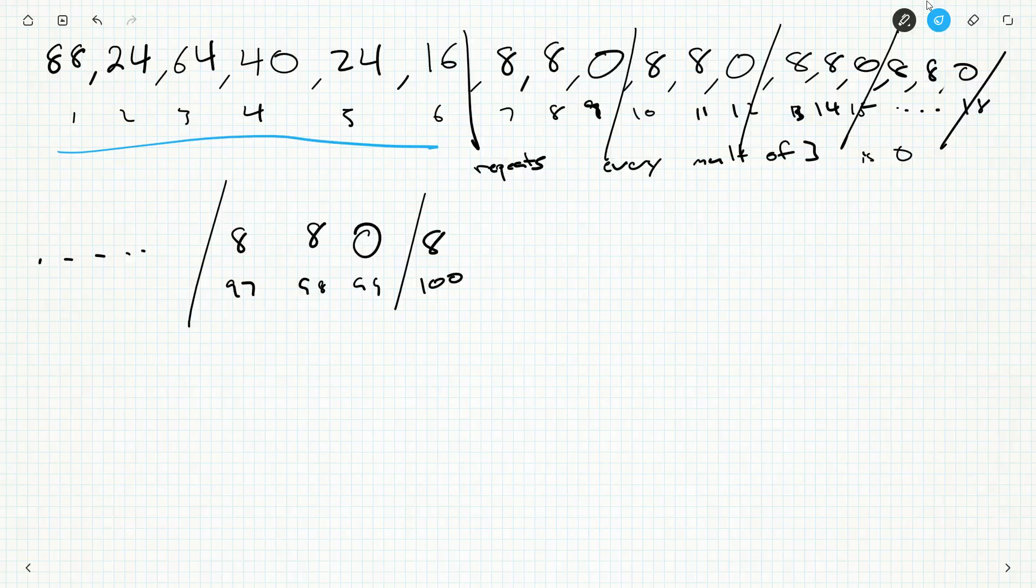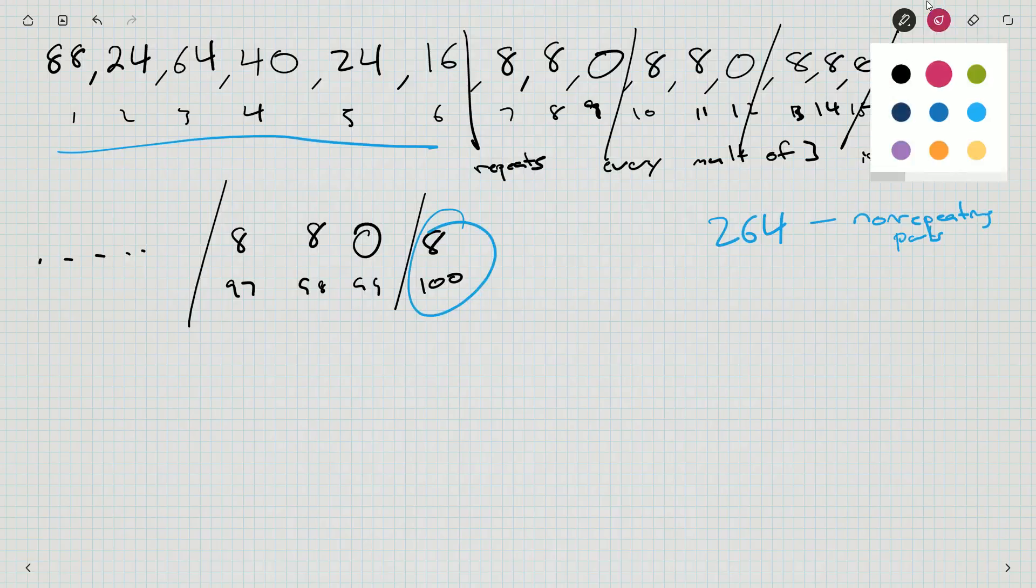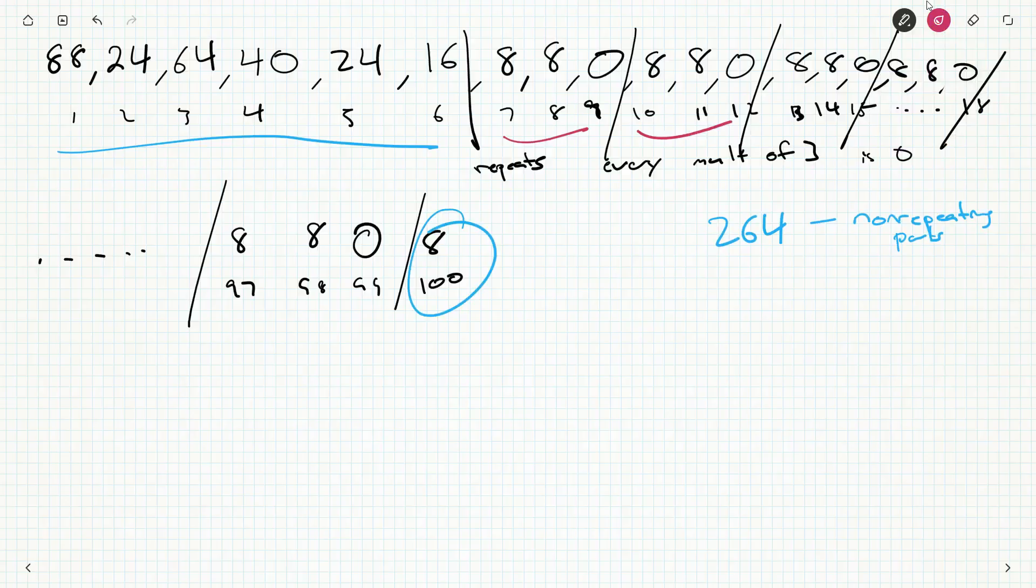So 264 for the non-repeating parts. And then we have groups of three. Well how many of these groups of three? Now each of them adds up to 16. So how many 16s am I adding?